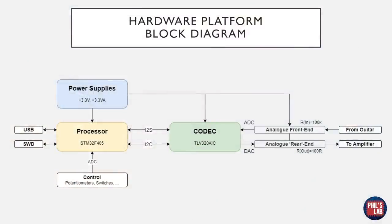Here again is the hardware platform block diagram. I have my processor with USB and serial wire debug connection through which I'll be doing the programming. I use the ADC on this processor to measure my control signals from potentiometers and switches. I have various power supplies for the analog and digital sections, my main codec that includes ADCs and DACs which stream data via I2S — very similar to SPI. I can also configure this codec via I2C, and I have analog front ends which perform a bit of filtering and impedance conversion. So I can plug my guitar in, send it through the codec, process it, and send it back to, for example, a guitar amplifier.